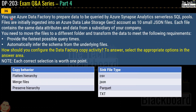Question number 36 says: you use Azure Data Factory to prepare data to be queried by Azure Synapse Analytics serverless SQL pools. Files are initially ingested into an Azure Data Lake Storage Gen2 account as 10 small JSON files, each containing the same data attributes from a subsidiary of your company. You need to move all files to a different folder and transform the data to provide the fastest possible query times and automatically infer the schema from the underlying files. The correct answers are copy behavior: merge file, and sync file type: Parquet.